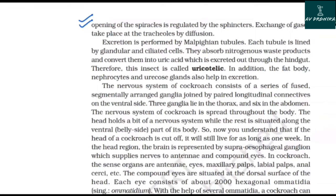Exchange of gases takes place at the tracheoles by diffusion. Excretion is performed by Malpighian tubules. Each tubule is lined by glandular and ciliated cells that absorb nitrogenous waste products and convert them into uric acid, which is excreted out through the hindgut. Therefore, this insect is called uricotelic. In addition, the fat body, nephrocytes, and uricose glands also help in excretion.